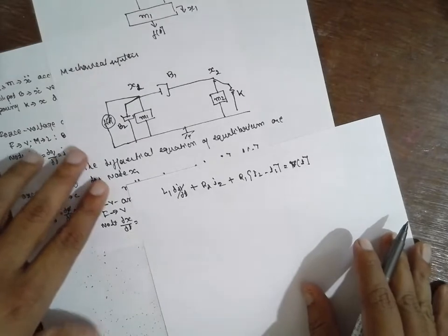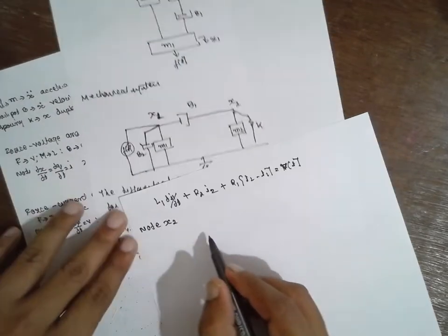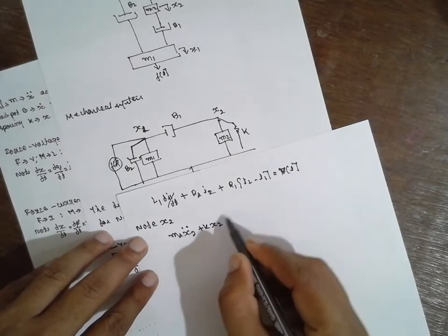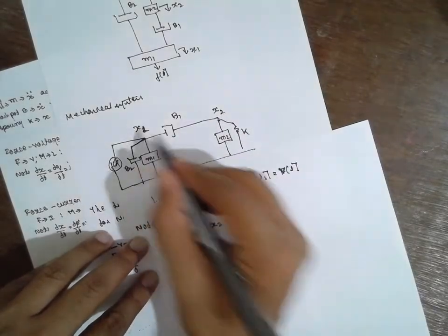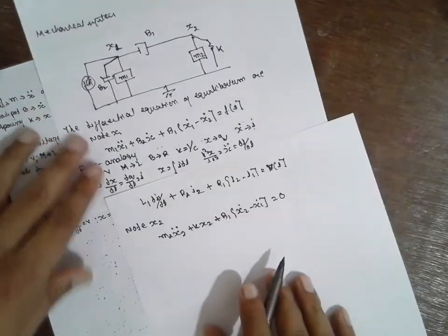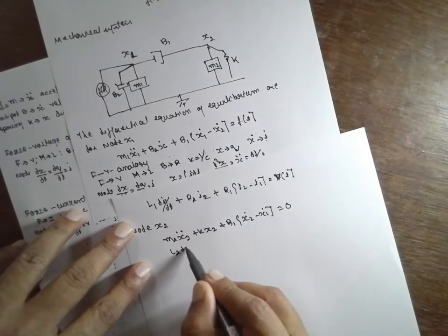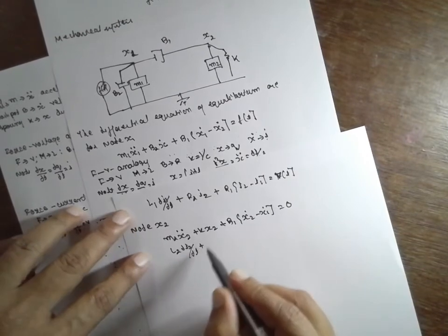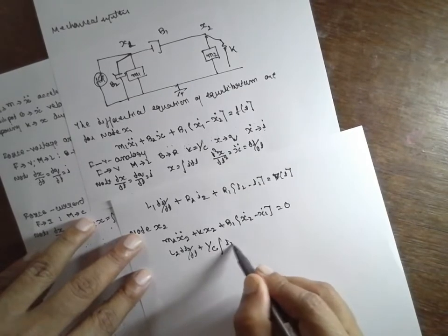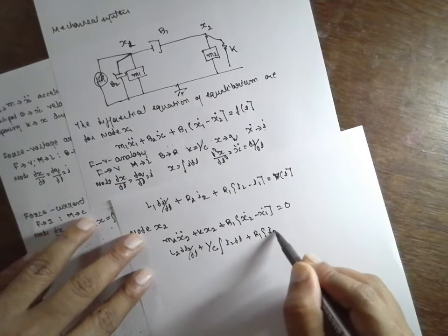Next I will consider node 2. Node 2 is X2. On the diagram, M2 X2 double dot plus K X2 plus B1 (X2 dot minus X1 dot) is equal to 0. Now replace everything with the help of this one. L2 DI2 divided by DT plus K, which is 1 by C integration of I2 DT, plus B which is R1 (I2 minus I1) is equal to 0.